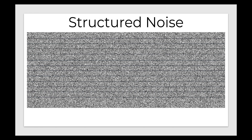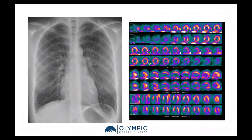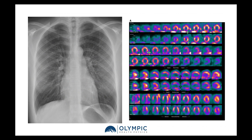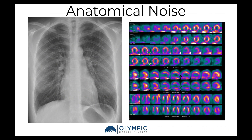The third type of noise is structured noise. Structured noise is going to be either periodic or it could be a stationary structure or patterns within the image. They usually pop up in the processing of the image. The last type of noise we're going to talk about is anatomical noise, which happens when anatomical structures overlap each other.